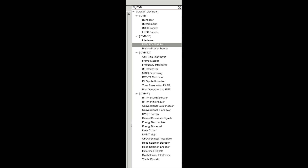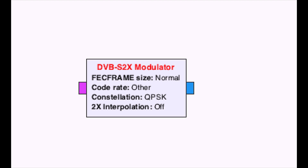Here's the list of blocks available in mainstream GNU Radio for DVB. Isn't this great? Note that there is already DVB-S2X, although it has not been completely tested due to the lack of receivers.